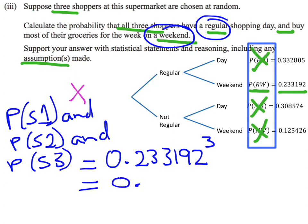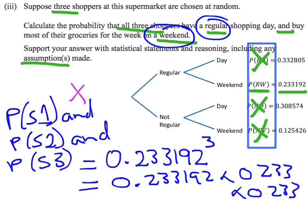You could also write that as 0.233192 times 0.233192 times 0.233192 — either version is valid. When we put that into our calculator, that comes out to an answer of 0.01268.